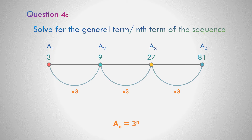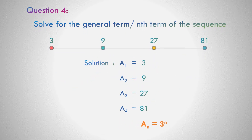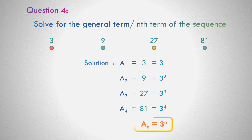Let us see if a sub n equals 3 to the n is the general term of the sequence. We replace n by 1, 2, 3, and 4: giving 3 to the 1, 3 squared, 3 cubed, and 3 to the 4th. The general term of the sequence is a sub n equals 3 to the n.